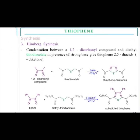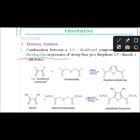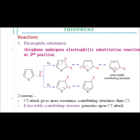Now see the third synthesis of thiophene — the Hinsberg synthesis. The statement of Hinsberg synthesis is the condensation between a 1,2-dicarbonyl compound and diethyl thiodiacetate in the presence of a strong base to give thiophene-2,5-dicarboxylic acid. Here the 1,2-dicarbonyl compound (benzil) reacts with diethyl thiodiacetate in the presence of base and H2O to give substituted thiophene as the product.